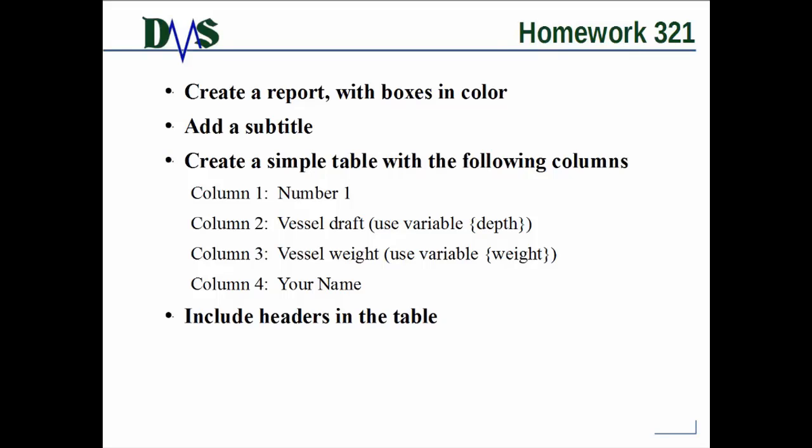Okay, time to practice all of this. So for homework number 3-2-1, what I would like you to do is create a report with the boxes in color. So that's the fancy formatting. I want you to add in a subtitle to the report. You're going to create a simple table with the following columns printed out in the table. Column number 1 is just the number 1. That's all I want you to print out in that one. This table is fairly artificial. I'm making up information for you to put in it. But it's not so much important what the information is. It's important how you format it to make it look nice. So make sure all the columns line up. Make sure you include headers in your table. That's one of the important things, label each of your columns.